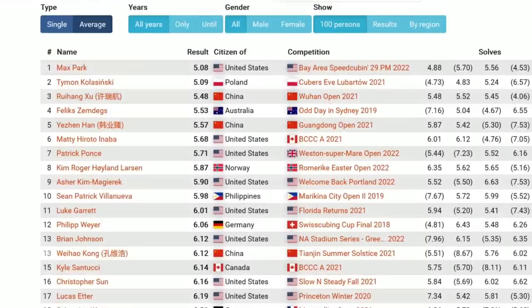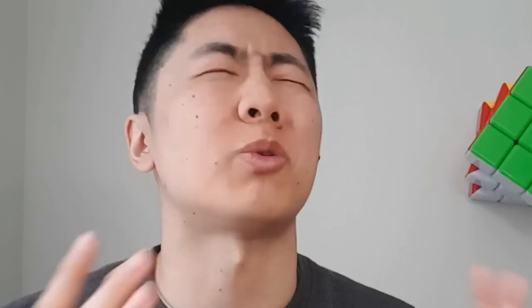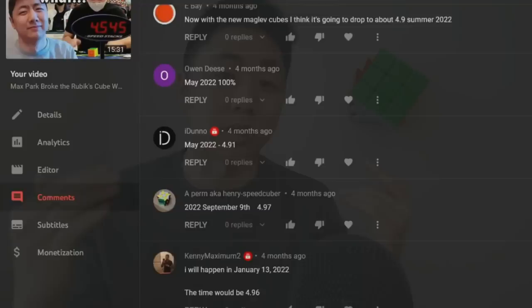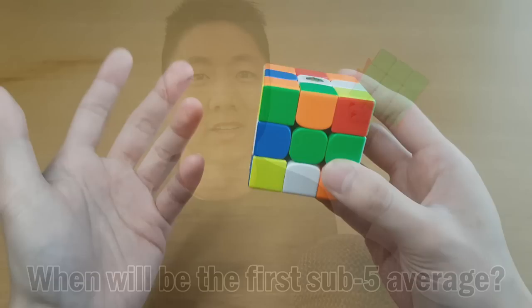So we have Timon and Max Park in a race for the first sub-5 average with 5.09 and 5.08. There's actually a pretty high chance that the next world record average is actually sub-5, which is crazy to think about. Last year I asked you guys when you think the first sub-5 average will happen, and a lot of you left your predictions, but it's been a while, and maybe you've changed your mind, so let me know in the comments now, when do you think the first official sub-5 average will happen? Now let's break down what Max did in these solves.